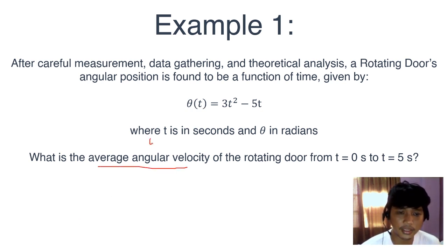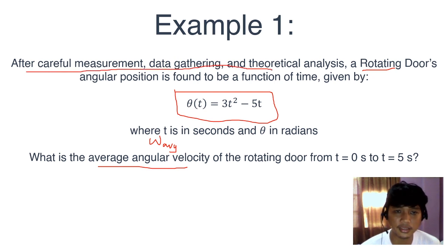We're asked to find the omega AVG of this door. Is this door rotating? Yes. How do we know? Well, it just says that the door is rotating. And what's up with this formula right here? It seems pretty random, but it helps to read this. After careful measurement, data gathering, and theoretical analysis.